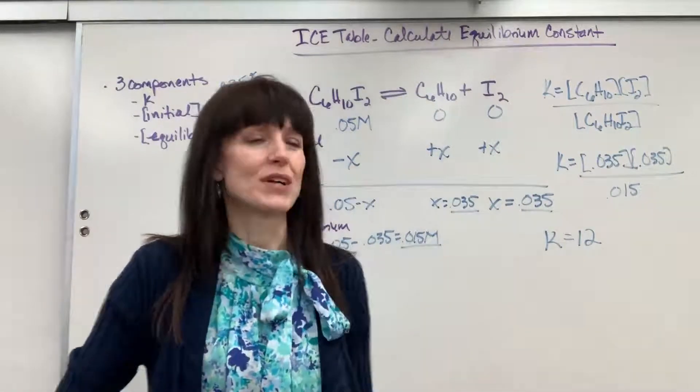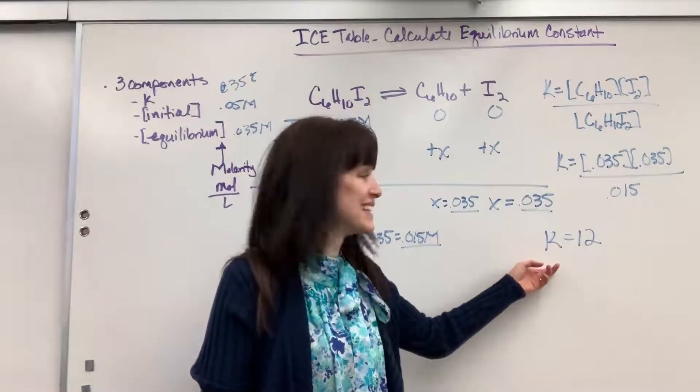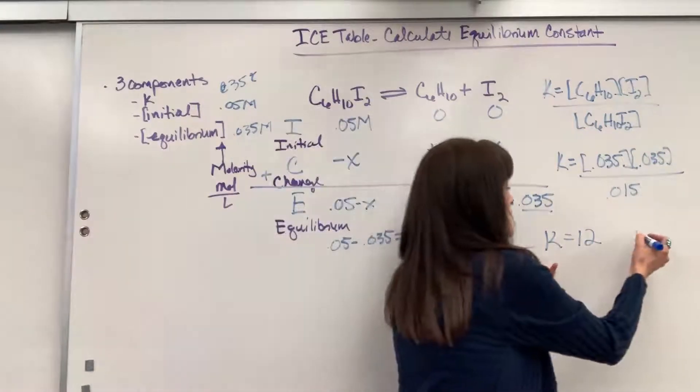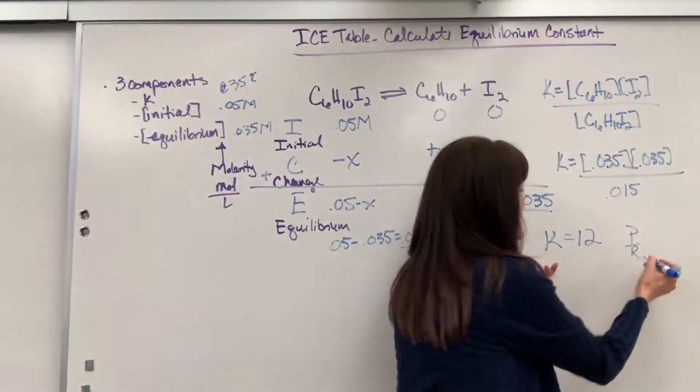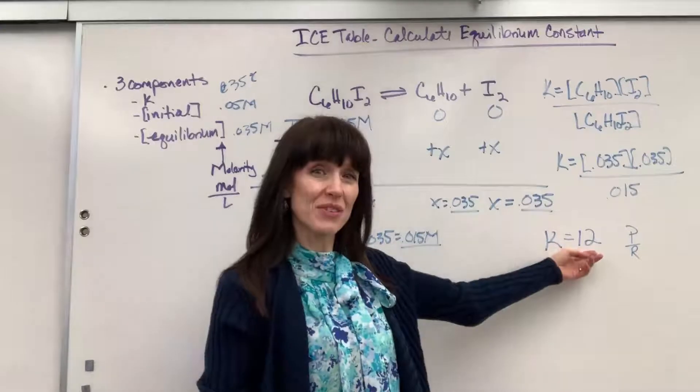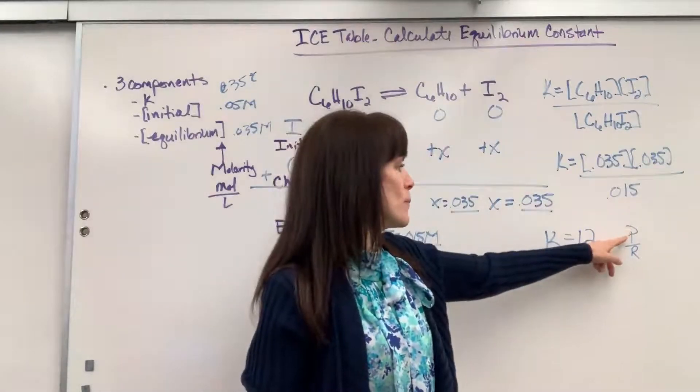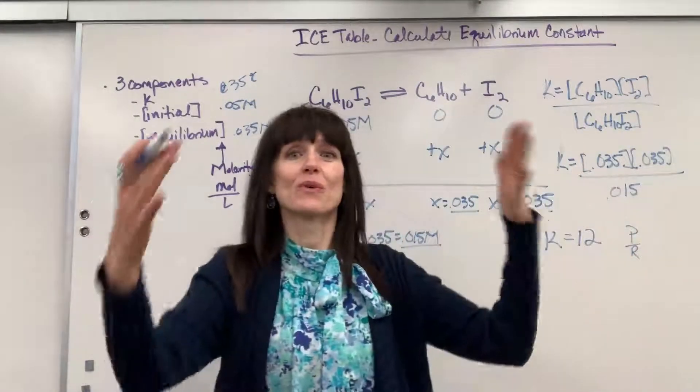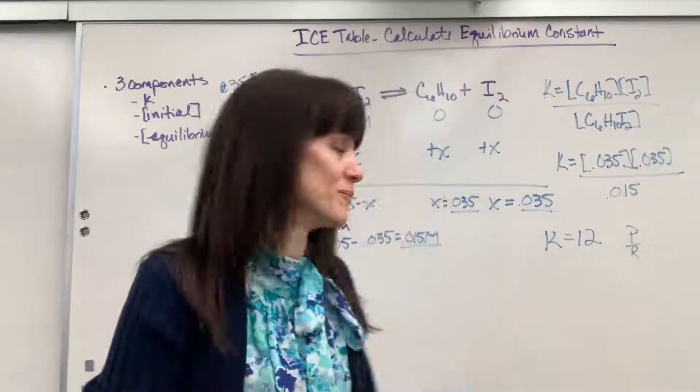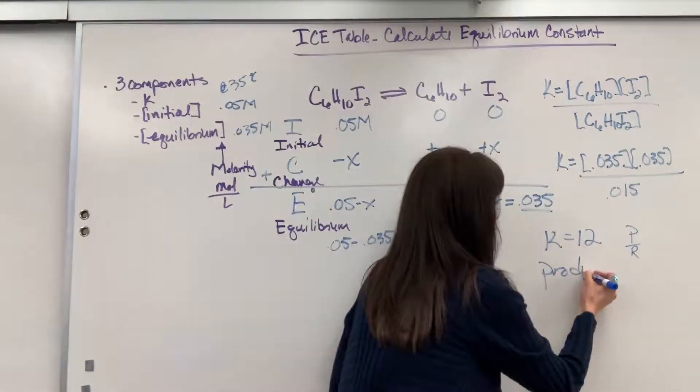A little follow-up question for you. Is that product or reactant favored? Remember, K is products over reactants. If I have a number greater than 1, it means I have more products than I do reactants when we're at that beautiful equilibrium. So this would be product favored because it's greater than 1.